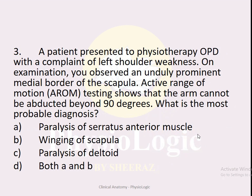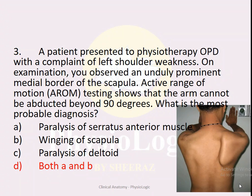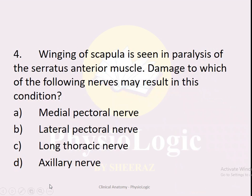MCQ number three: A patient presented with left shoulder weakness. Examination shows an unduly prominent medial border of the scapula, and active range of motion shows the arm cannot be abducted beyond 90 degrees. Options: A — paralysis of serratus anterior, B — winging of scapula, C — paralysis of deltoid, D — both A and B. The correct option is D, both A and B — paralysis of serratus anterior causes a prominent medial border, also known as winging of scapula.